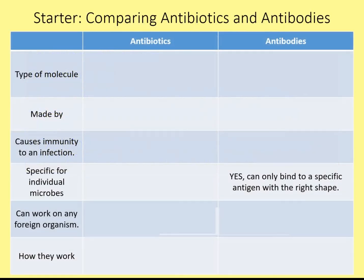We've got a table here covering: what type of molecules antibodies and antibiotics are, what they're made by, whether they cause immunity to infection, whether they're specific for individual microbes, whether they can work on any foreign organism, and how they work. Give yourself five minutes to write some answers in the back of your book, or just think about the answers, then pause and restart the video and I'll go through them.